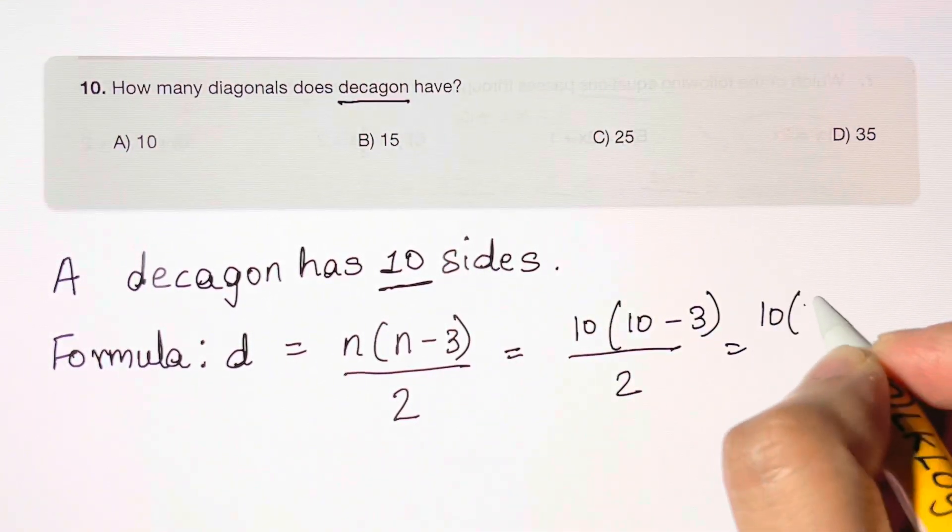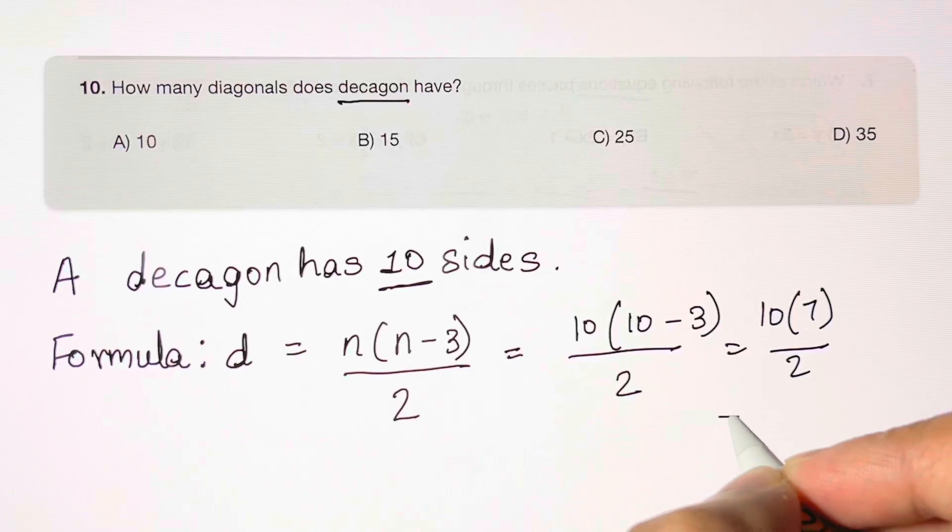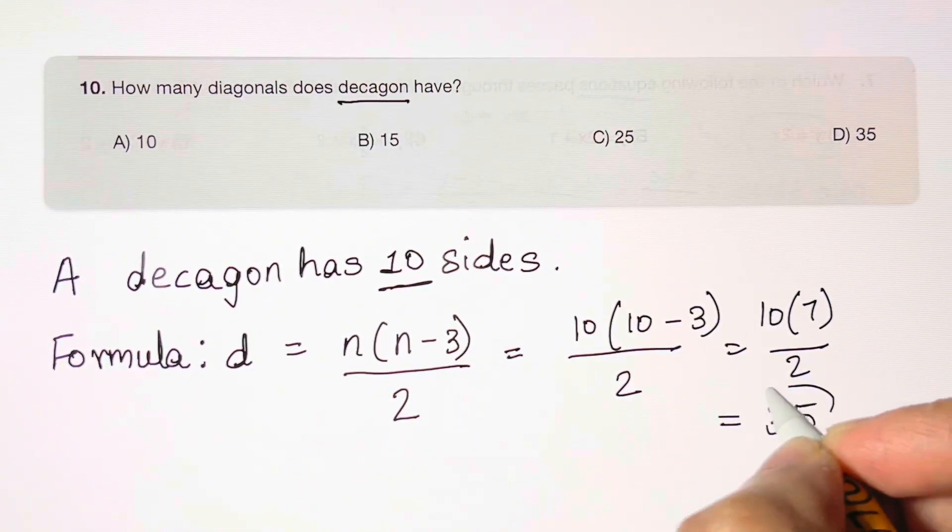Which is equal to 10 times 7 over 2 and which is equal to 35.